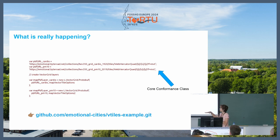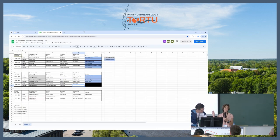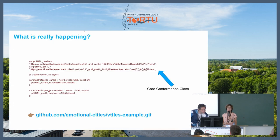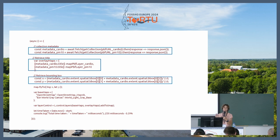Looking in more detail at the code — you can check out the code for this example — here you can see the core conformance class in the URL template. The application is retrieving the tileset metadata, getting the title dynamically, and also the bounding box. Based on the bounding box it creates a point, and this is the point where the application flies to when you first load it.